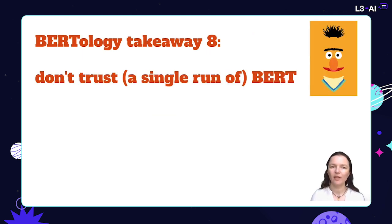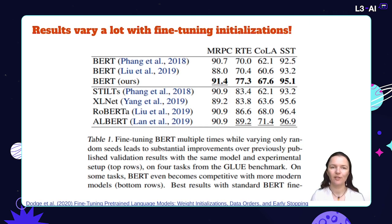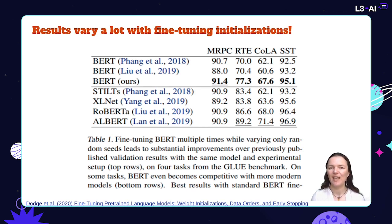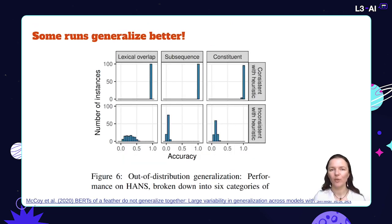Takeaway number eight is that BERT should not be trusted — at least not in a single run. This table shows BERT fine-tuning results on four GLUE tasks from three different studies, and by simply varying the fine-tuning initialization it is possible to get up to seven percent improvement over the original reports. In MRPC, results even exceeded some later models such as XLNet and RoBERTa. A lucky random seed can make so much difference that the model not only performs better on a given test set but also generalizes better.